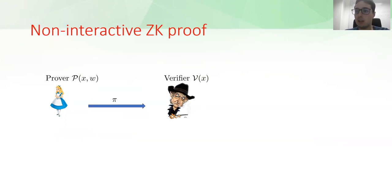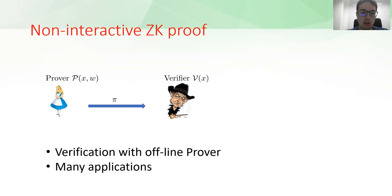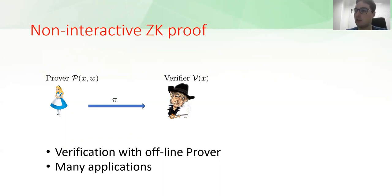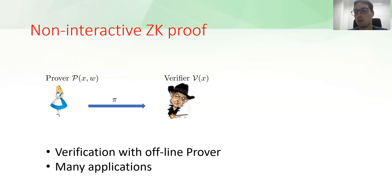We are also interested in non-interactive zero-knowledge proofs, which are a particular kind of zero-knowledge proof consisting of only one message sent by the prover to the verifier, who outputs only accept or reject. We are interested in NIZKs not only because verification is possible even when the prover is offline, but also because they are used as primitives to build more complex cryptographic tools.